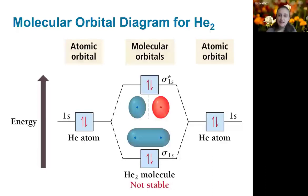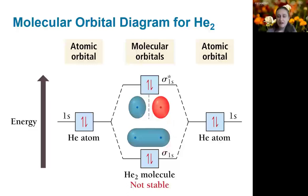If we consider the same diagram for helium, the only difference is the number of electrons. Now both 1s orbitals on the atoms are filled, so there are a total of four electrons. When we fill the molecular orbitals from lowest to highest energy, both the bonding and anti-bonding levels are filled. From this, we would understand that the helium dimer is not stable — its bonding electrons are basically counteracted by the corresponding anti-bonding electrons.